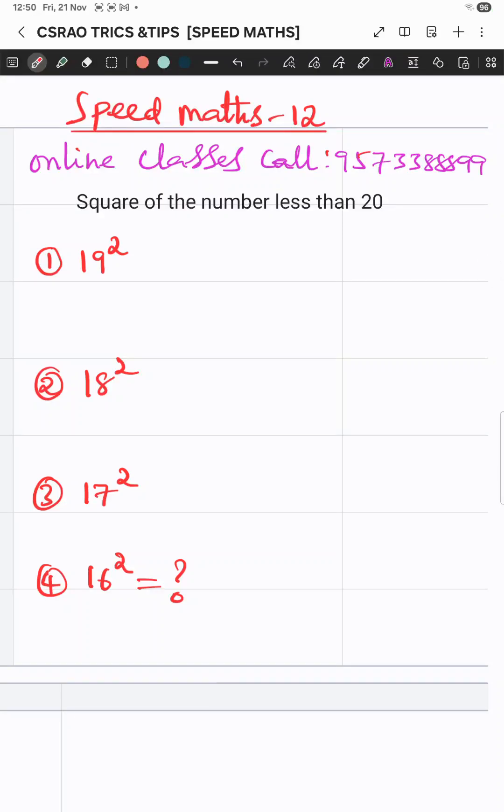Hello everyone, today we are going to teach the square of numbers less than 20. Here is 19. 19, how much is it less than 20? It is 19 minus 1. 19 minus 1 is 18.